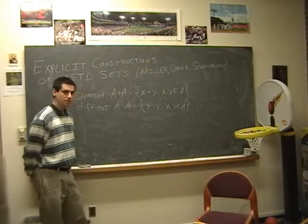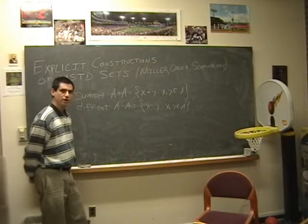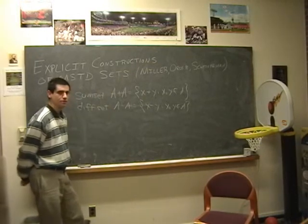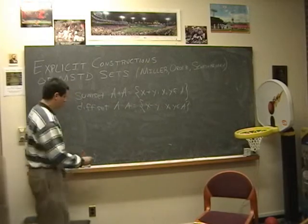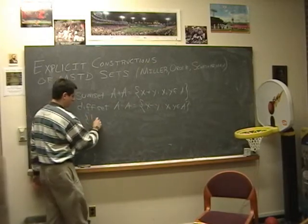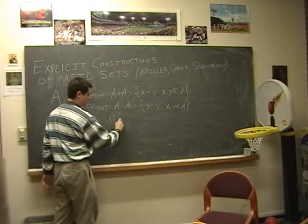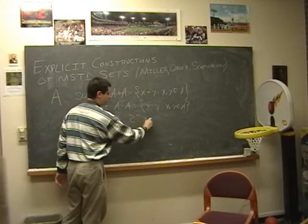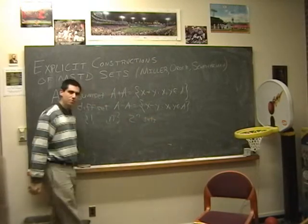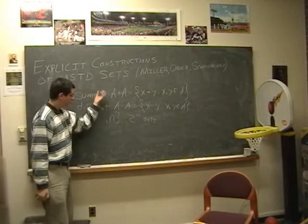And so while there were explicit known examples of sets that had more sums than differences, it was conjectured that they are very small. What we mean by that is if you look at the elements one through n, then there are 2^n possible sets. And it was thought the percentage of sets that were more sum than differences